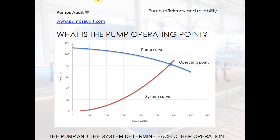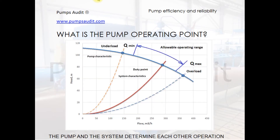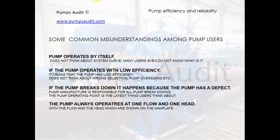The pump works in the system, not by itself — this is the main idea to keep in mind, but pump users very often forget it. The pump operating point moves along the pump curve depending on how the system characteristic changes over time. It can lie within the allowable operating range, giving high efficiency and reliability, or go outside it, resulting in low efficiency and low reliability.